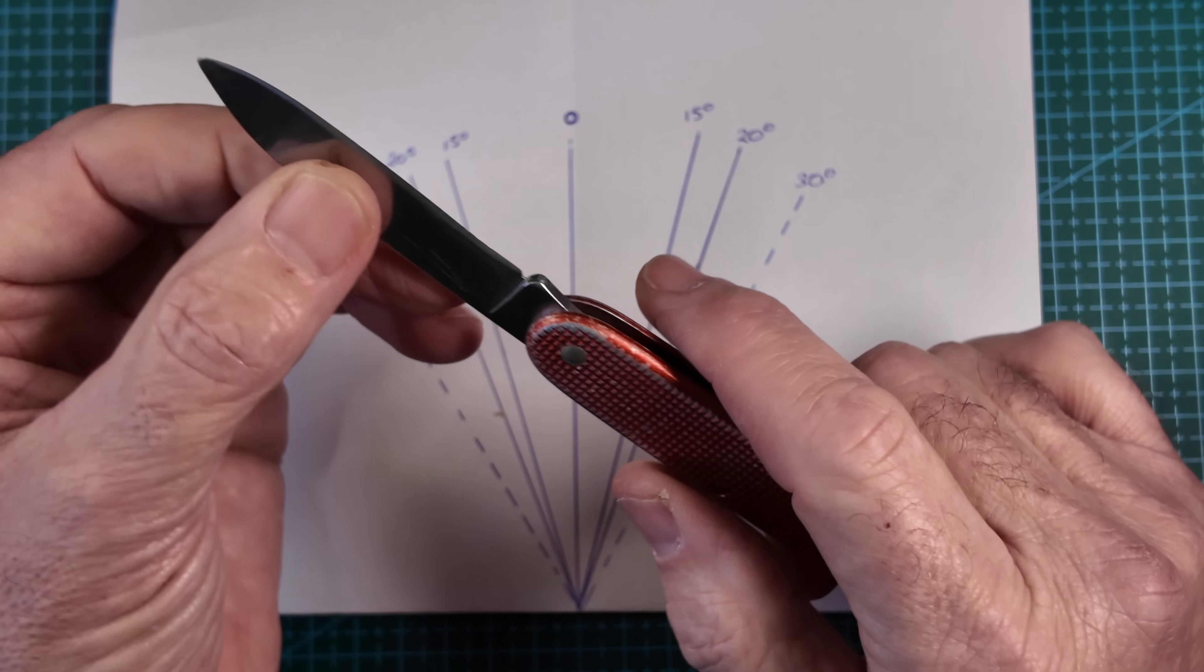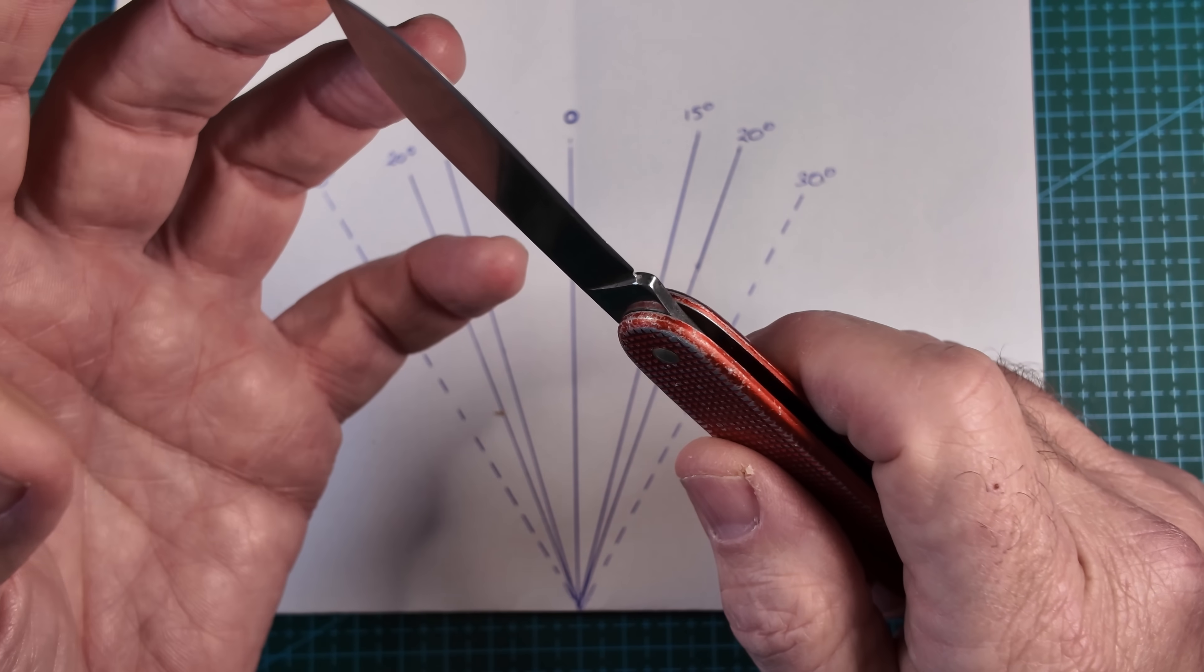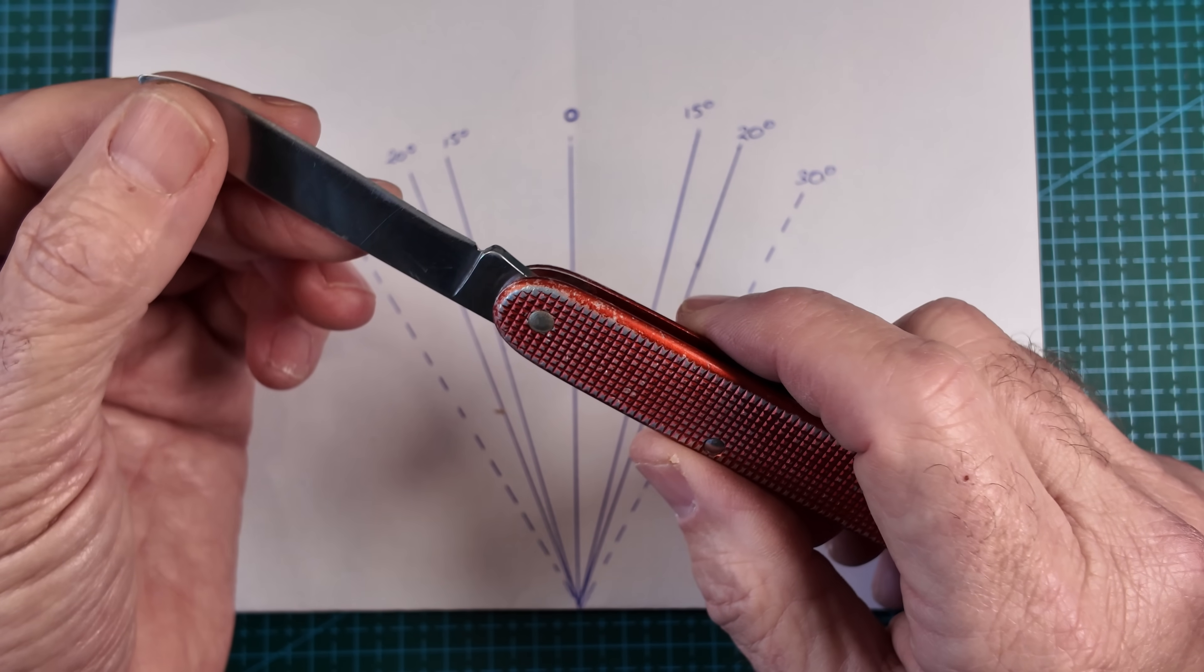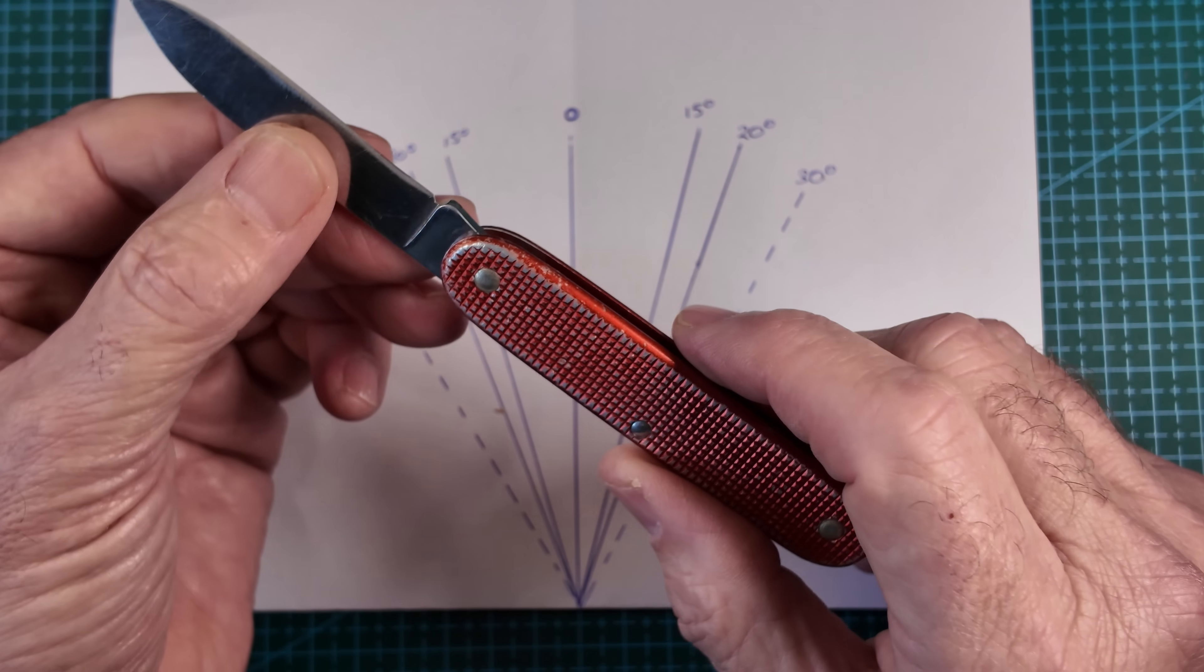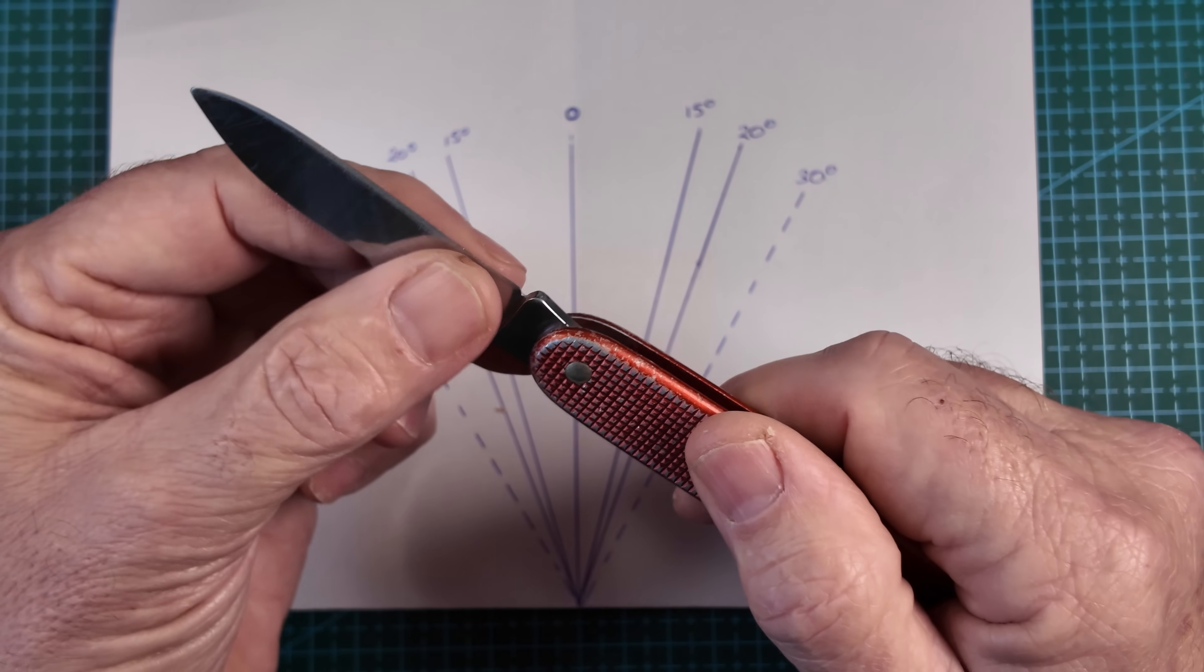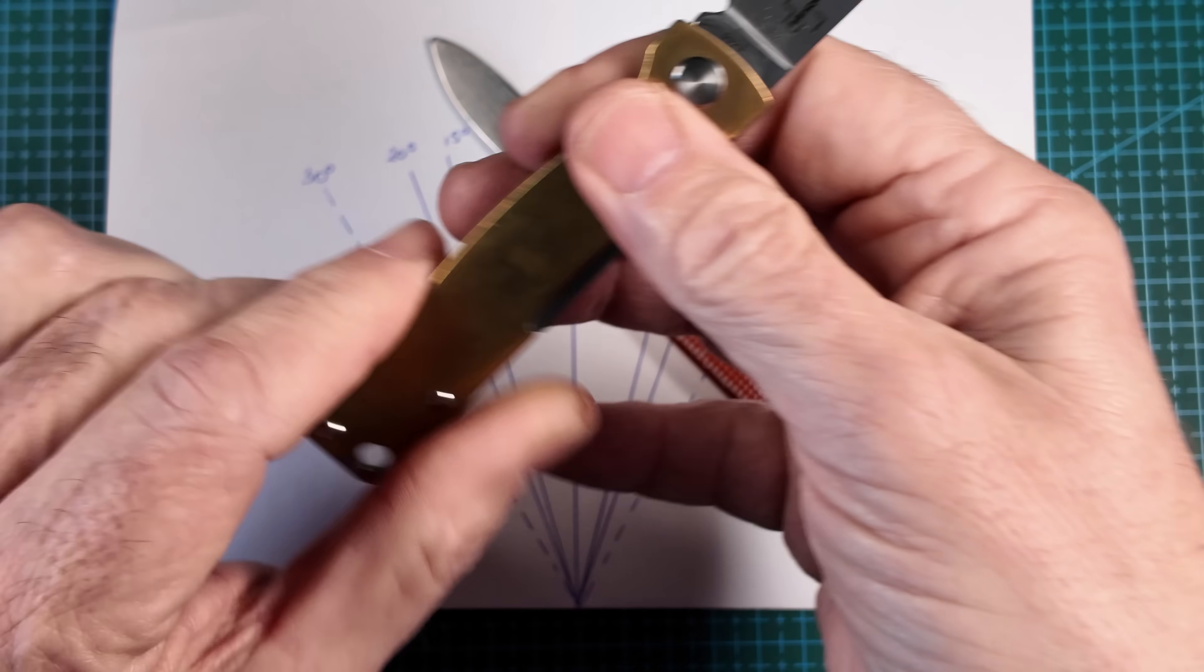The angle you need really depends on your use. So for bushcraft you would go for a higher angle, but for a normal pocket knife then probably somewhere between 15 and 20 degrees is probably perfect for you. The other thing to remember as well is to consider the grind on the blade as well. On the Victorinox, it's a fairly flat grind.